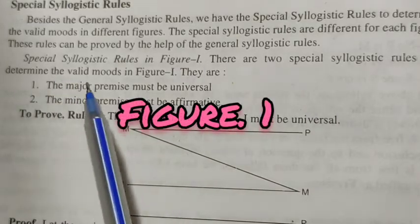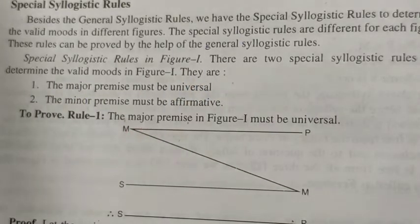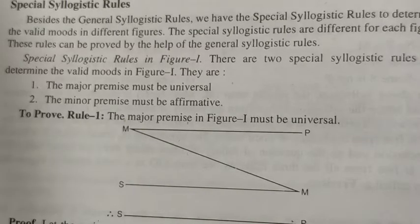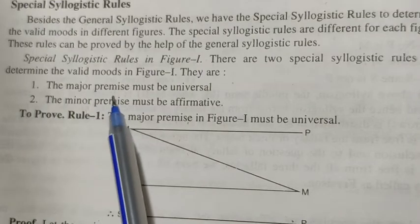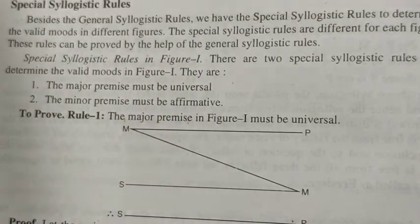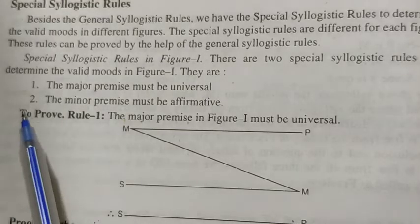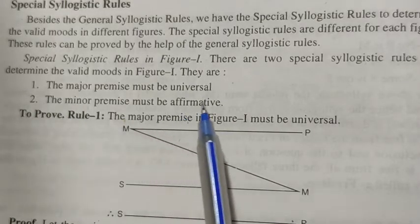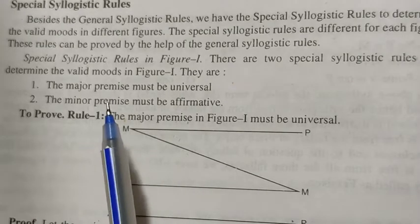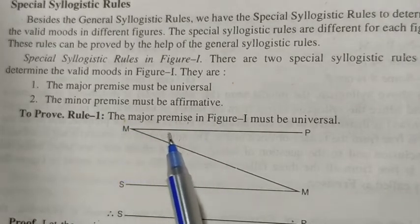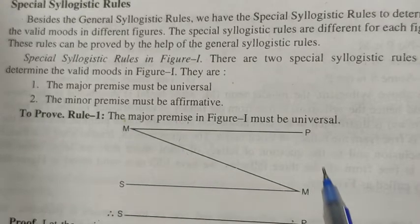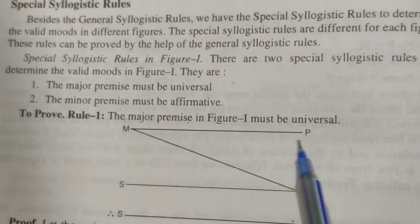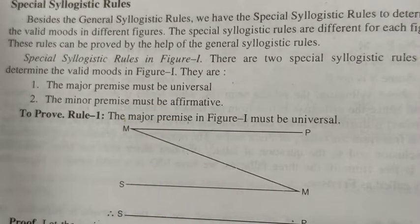Special syllogistic rules determine the valid modes in Figure 1. There are two special syllogistic rules in Figure 1. Rule number 1: the major premise must be universal. Rule number 2: the minor premise must be affirmative. So in Figure 1, the major premise must be universal and the minor premise must be affirmative.